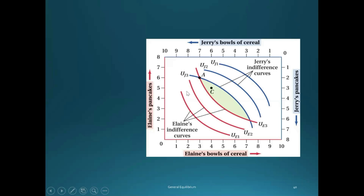Here we have Elaine's indifference curves shown with the red curves. The ones further up and to the right for Elaine imply that she has more of the goods, so she is happier. For Jerry, it's the opposite — his indifference curves are shown by the blue curves. As he moves down and to the left along this graph, that implies more of the goods are allocated to Jerry. So the indifference curves for Jerry that are further down and to the left correspond to higher levels of utility for Jerry.